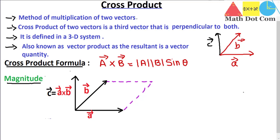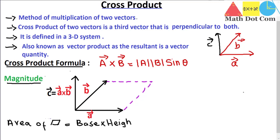The area of the parallelogram equals base times height. The base is vector A, so we replace base with A. Now we need to calculate the height. If we draw it, this will be the height of the parallelogram, and that height is currently unknown. For that we will use a trigonometric ratio.